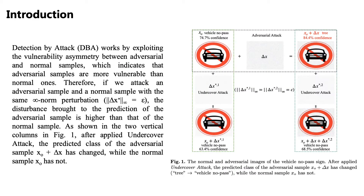Detection by Attack works by exploiting the vulnerability asymmetry between adversarial and normal samples, which indicates that adversarial samples are more vulnerable than normal ones. Therefore, if we attack an adversarial sample and a normal sample with the same infinity norm perturbation, the disturbance brought to the prediction of the adversarial sample is higher than that of the normal sample. As shown in Figure 1, after applying the undercover attack, the predicted class of the adversarial sample has changed, while the normal sample has not.